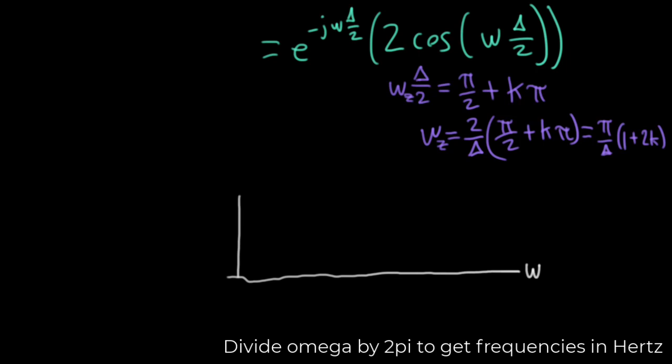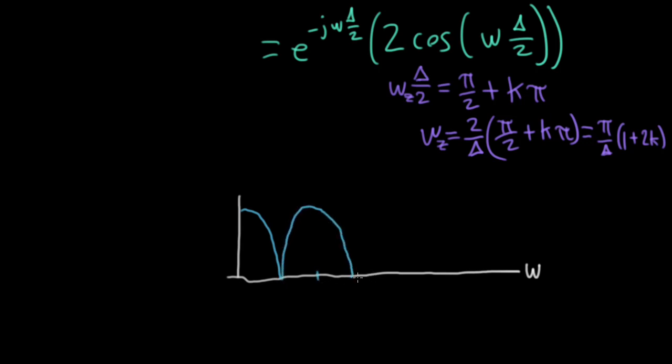Anyway, the plot is going to wind up looking a little something like this. It's basically a cosine, but since we're plotting absolute value, we wind up taking the downward-going lobes and flipping them upside down. So we have these nulls at these various points. I'll have one at pi over delta. I'll have one at 3 pi over delta, 5 pi over delta, and so on.